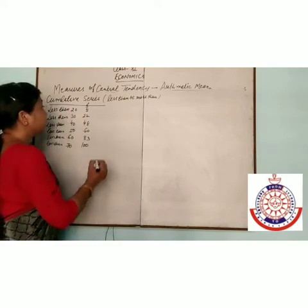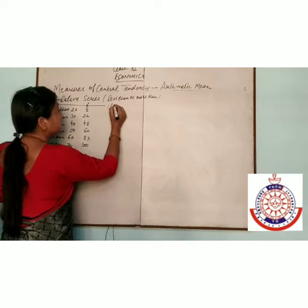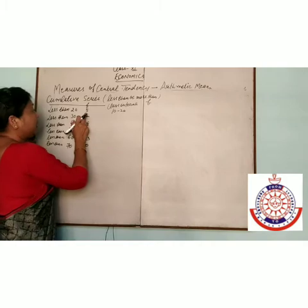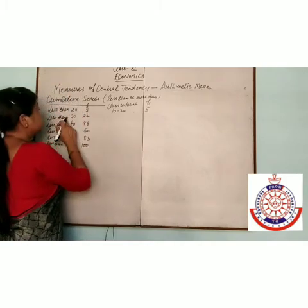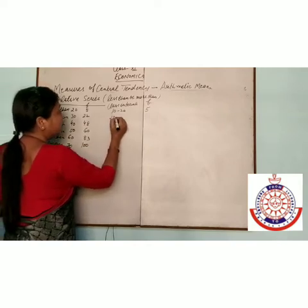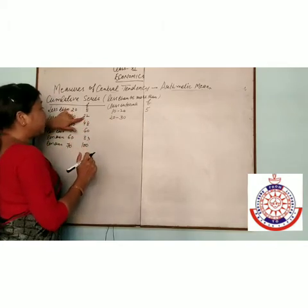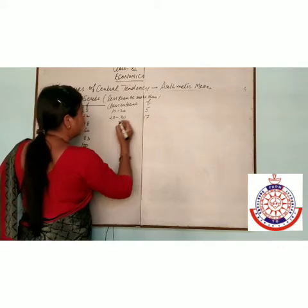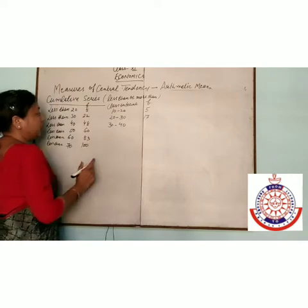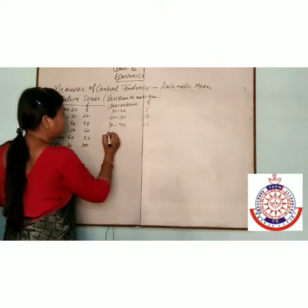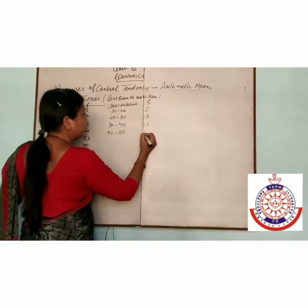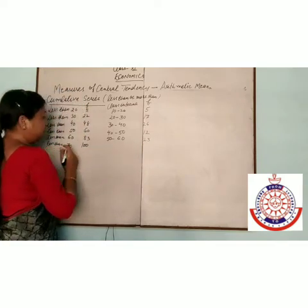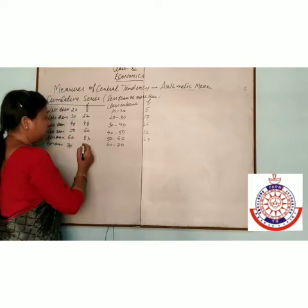Less than 20 gives interval 10–20, frequency = 5. Less than 30 gives interval 20–30, frequency = 22 − 5 = 17. Then 30–40: 48 − 22 = 26. Then 40–50: 60 − 48 = 12. Then 50–60: frequency = 23. And less than 70 means 60–70, frequency = 70.